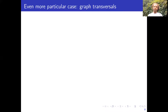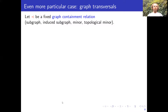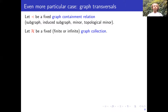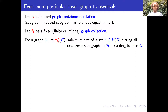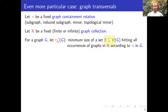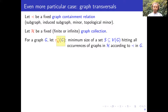We study an even more particular case and focus on what we call graph transversals. I denote by a symbol a fixed graph containment relation — I consider the subgraph, induced subgraph, minor, and topological minor relations. I denote by calligraphic H a fixed graph collection that can be finite or infinite. For a graph G, I denote by tau of H and this relation the transversal number — the minimum size of a set of vertices that hits all occurrences of graphs in H according to this relation.